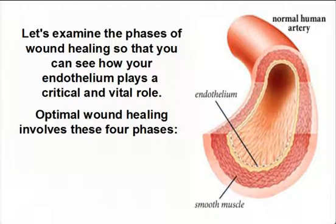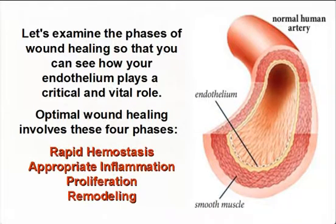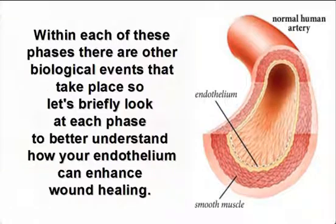Optimal wound healing involves these four phases: rapid hemostasis, appropriate inflammation, proliferation, and remodeling. Within each of these phases there are other biological events that take place, so let's briefly look at each phase to better understand how your endothelium can enhance wound healing.